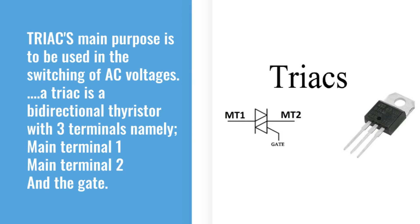A TRIAC's main purpose is to be used in the switching of AC voltages. A TRIAC is a bi-directional thyristor with three terminals: main terminal 1, main terminal 2, and the gate.